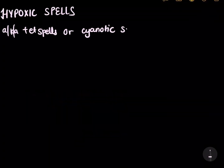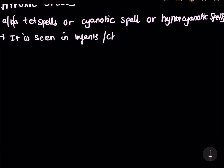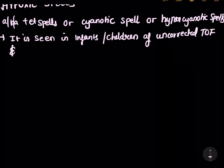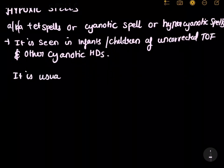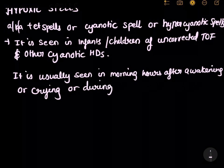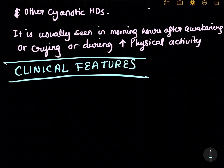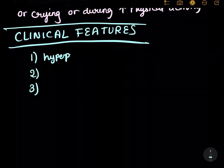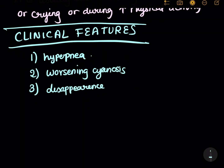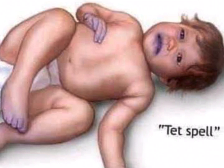Hypoxic spells, also called a tet spell, cyanotic spell, or hypercyanotic spell, are usually seen in infants and children with TOF physiology or other cyanotic heart diseases. They are seen during the morning or just after awakening, during crying, or during intense physical exercise. The clinical features are hyperepnea or increased respiratory rate, worsening cyanosis, and disappearance of the existing murmur. The patient shows progressive cyanosis with crying and hyperventilation.